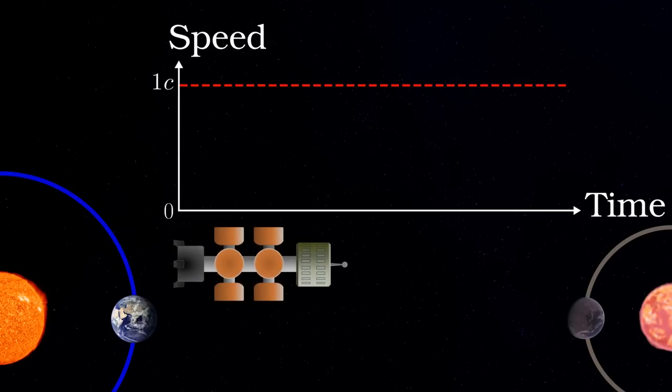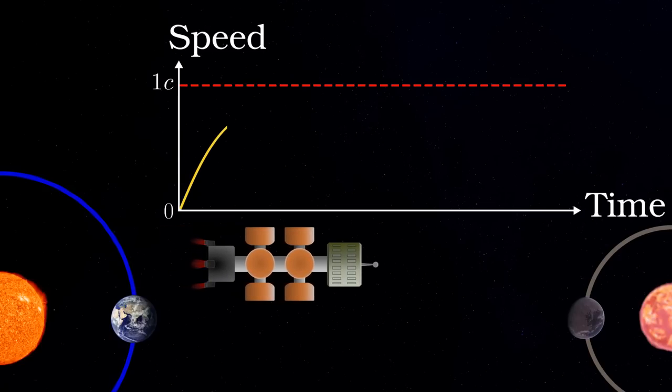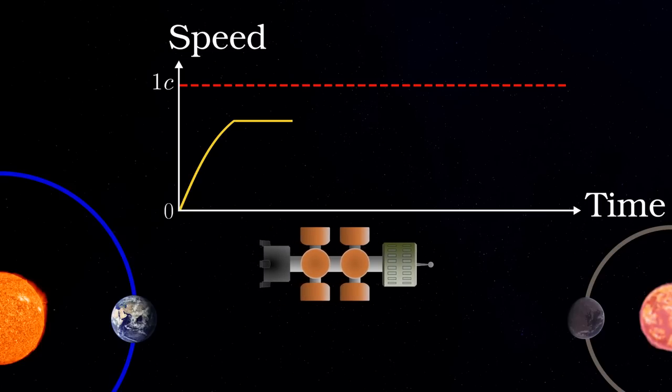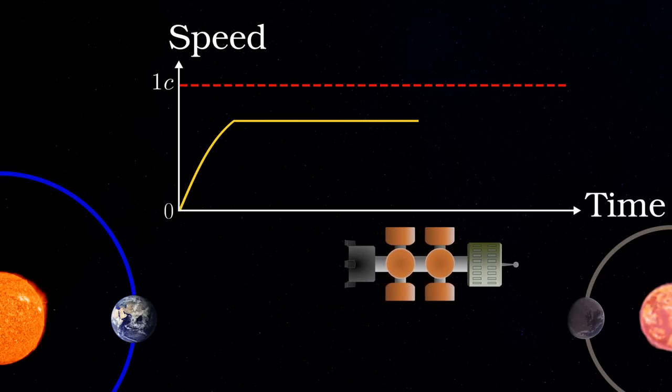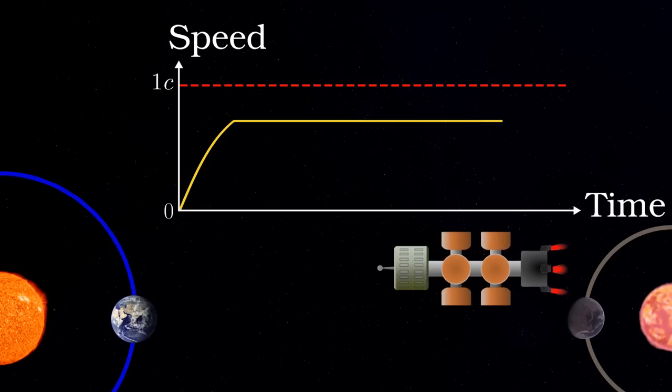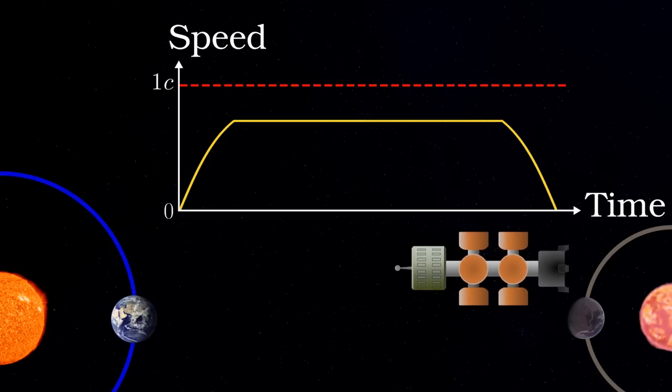A typical trip would look like this: burn forward for a certain time so your speed rises, but never gets to the speed of light, then coast along at this constant speed, and then burn back to come to a stop again.